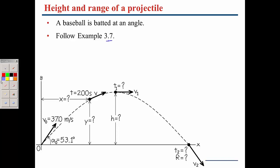Now for example 3.7 — the classic projectile problem. A baseball is hit upwards with a velocity of 37 meters per second at an angle of 53.1 degrees. We draw a triangle and break the initial velocity into v₀x and v₀y. These two components are completely independent. The acceleration in the y-direction is negative 9.8 m/s², and in the x-direction it is zero.